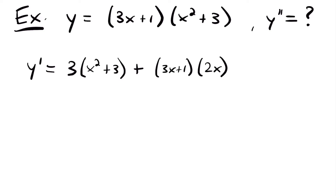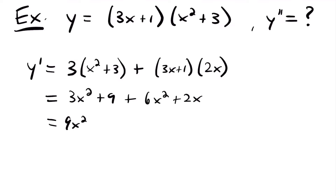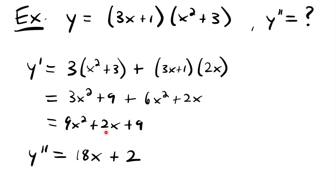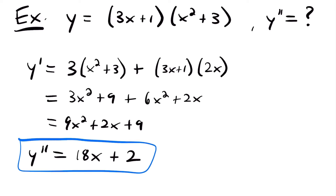This is not going to be too bad to simplify before we take our second derivative. We're going to have 3x squared plus 9, plus 2x distributed to 3x plus 1, giving us 6x squared plus 2x. Simplifying the like terms 3x squared and 6x squared, our function is 9x squared plus 2x plus 9. Now we can take the second derivative by differentiating: the derivative of 9x squared is 18x, plus 2 from the derivative of 2x. The derivative of 9 is 0, so y double prime equals 18x plus 2.